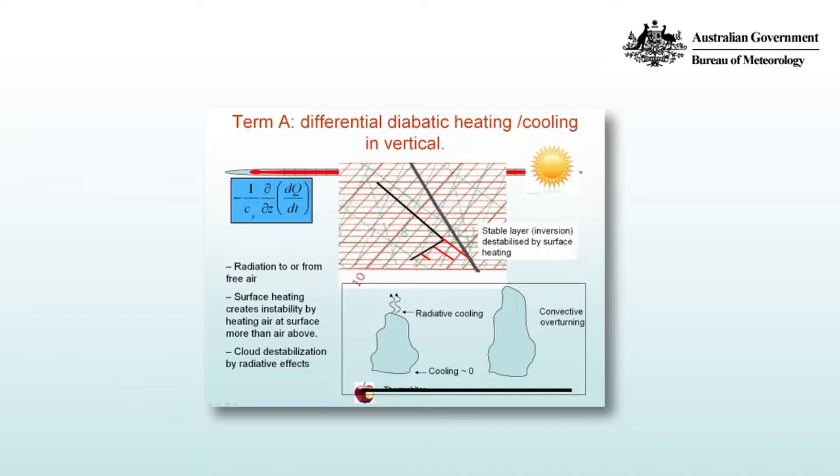Consider a nocturnal radiation inversion where the temperature increases with height. Because dz is positive, that means that γ is in fact negative.